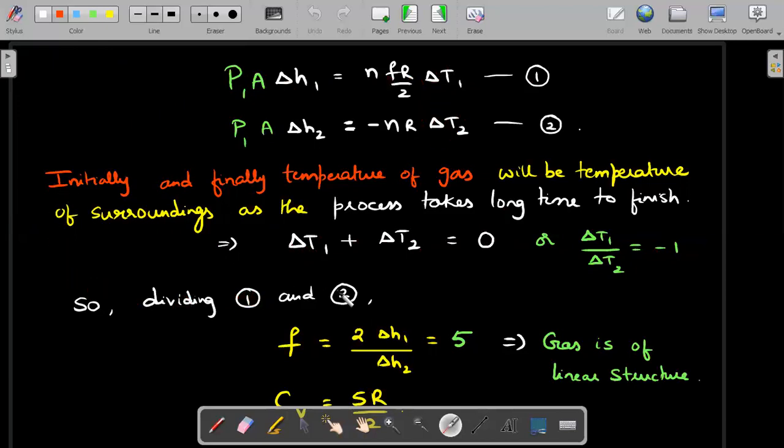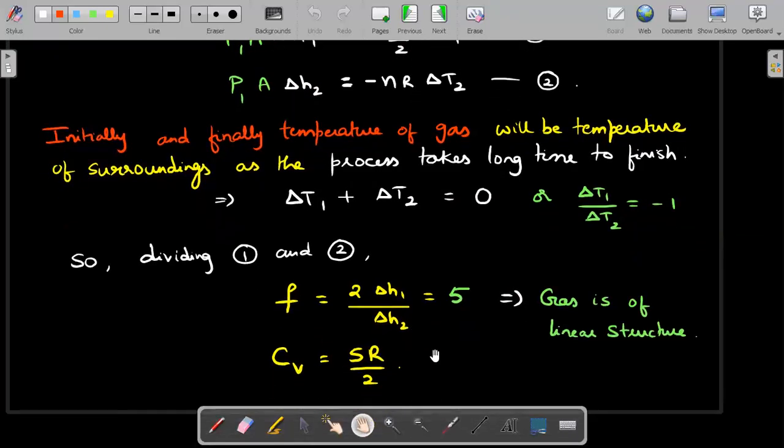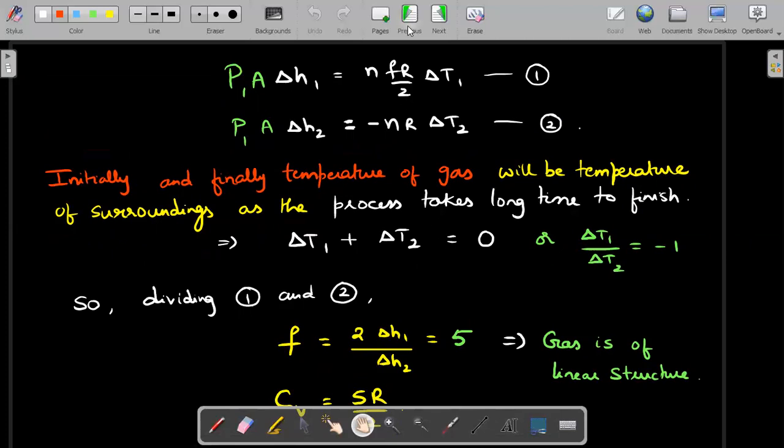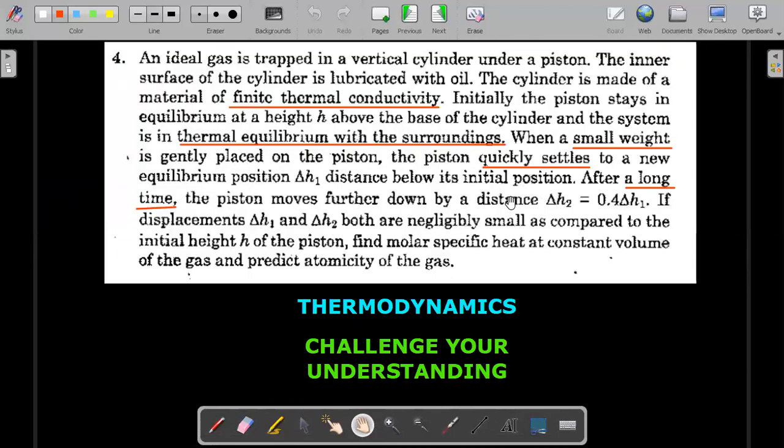F by 2 comes on the right hand side. F is simply two times delta H1 by delta H2, which he gave as one by 0.4, so I get five. If degrees of freedom are five, it should be a linear structure. A gas of linear structure will have three degrees of translational freedom and two degrees of rotational freedom, giving CV value as five R by two. This is the solution.